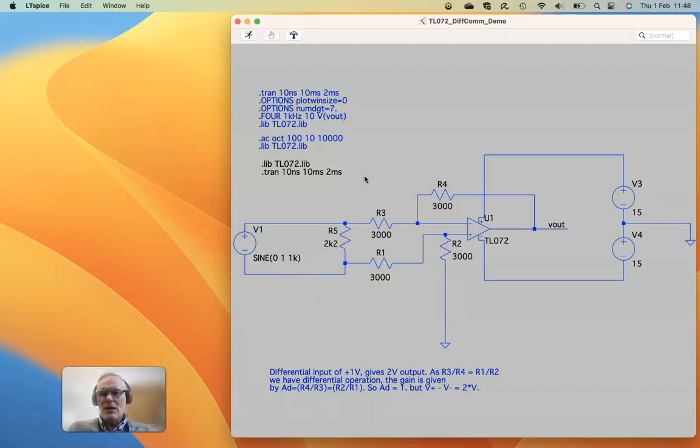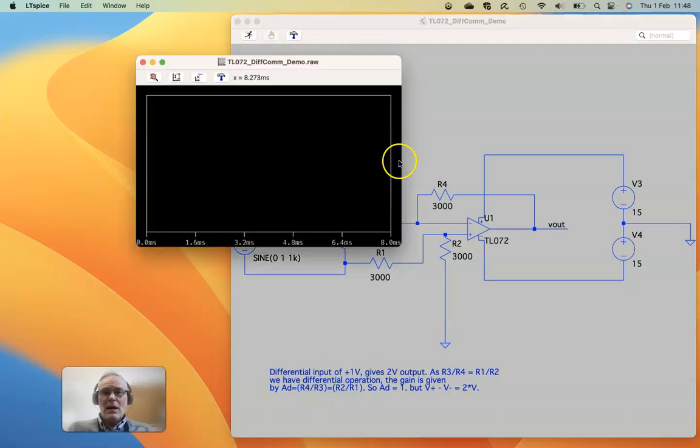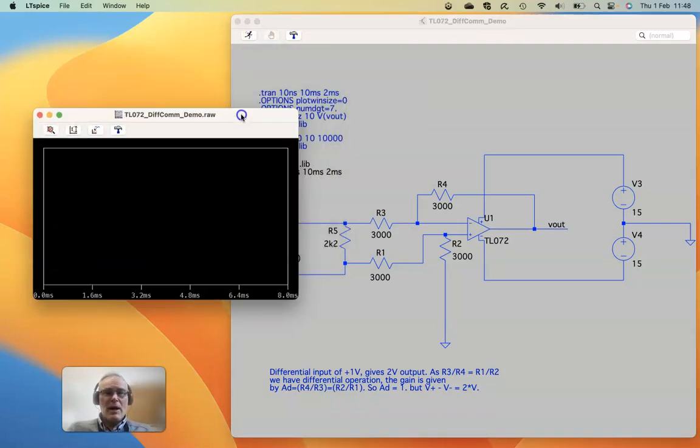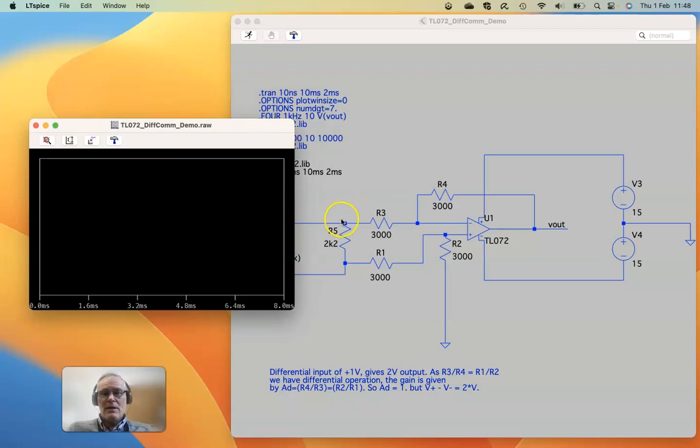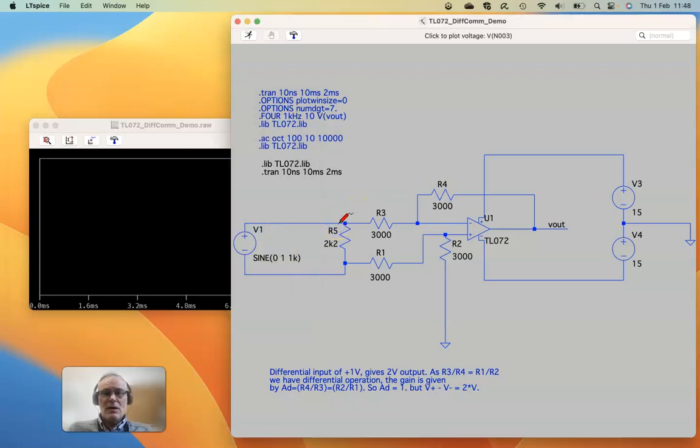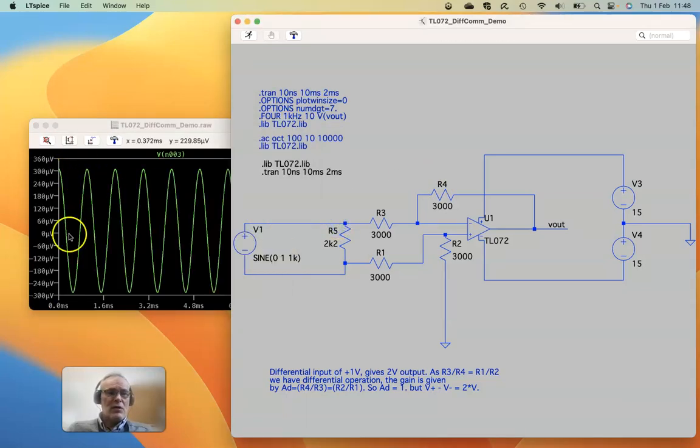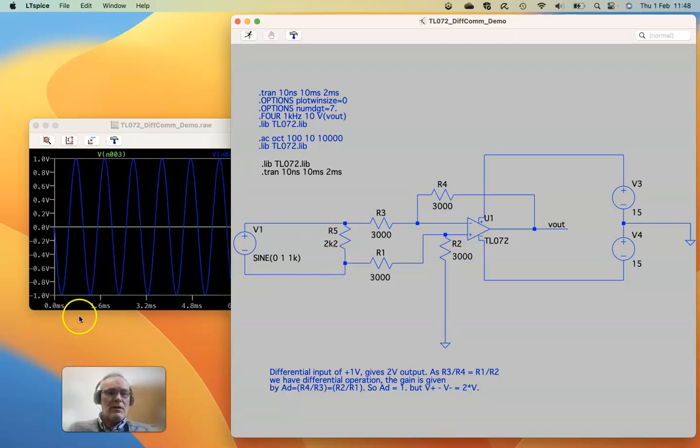The trouble is with LTSpice, LTSpice requires that the voltage sources have a direct path to 0V or a ground terminal in order to do the analysis. So if I run this analysis and inspect the two inputs, here we have a much lower voltage than we'd expect. And here we have the 1V peak-to-peak that we've put into the circuit itself.